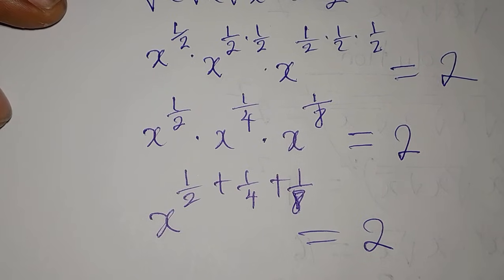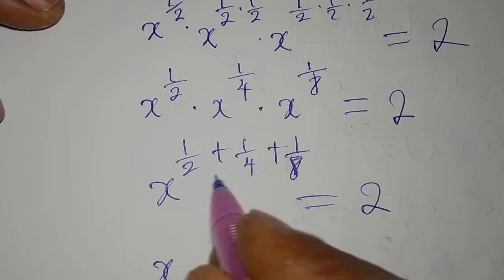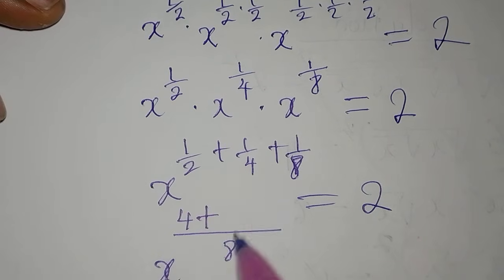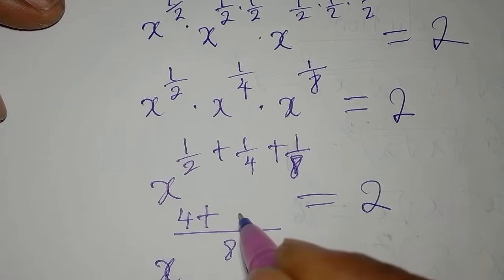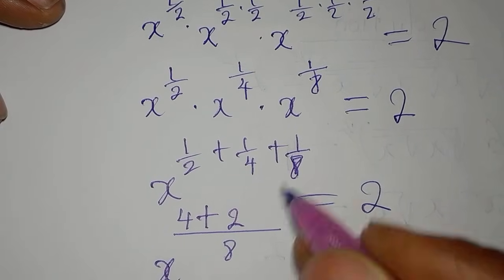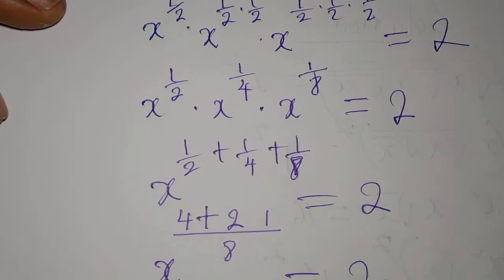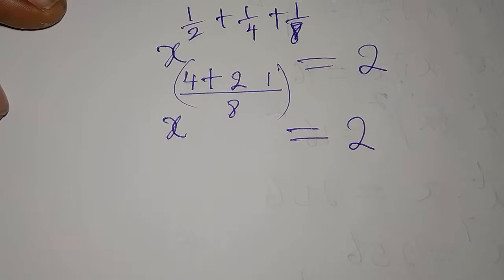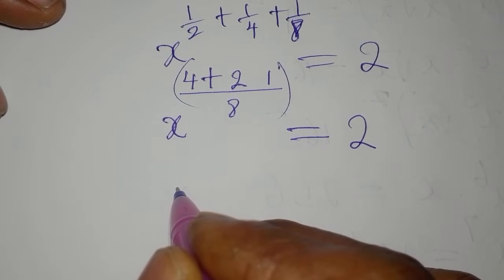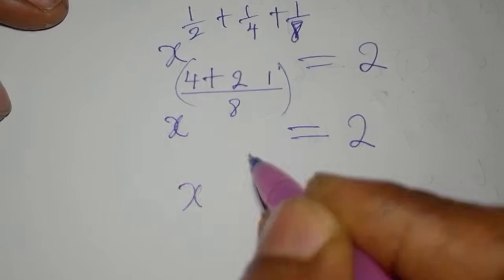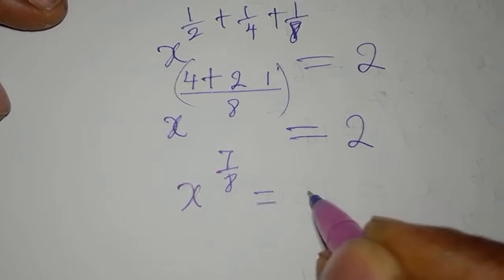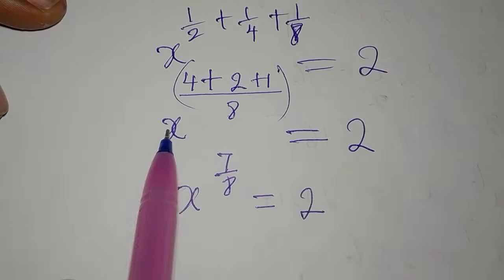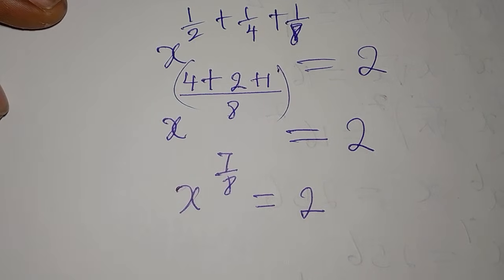The LCM of the denominators is 8. So: 8 divided by 2 is 4, times 1 is 4; 8 divided by 4 is 2, times 1 is 2; 8 divided by 8 is 1, times 1 is 1. The total is 4 plus 2 plus 1, which is 7 over 8. So we have x to the power of 7 over 8 equal to 2.